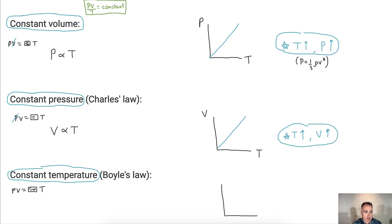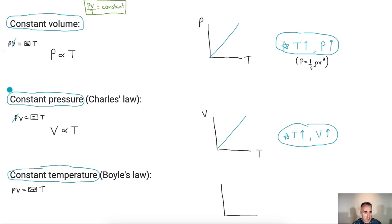Finally, we have constant temperature, also known as isothermal. If the temperature is constant, we ignore it, and we can say that pressure is proportional to 1 over V — so pressure is proportional to 1 over volume.